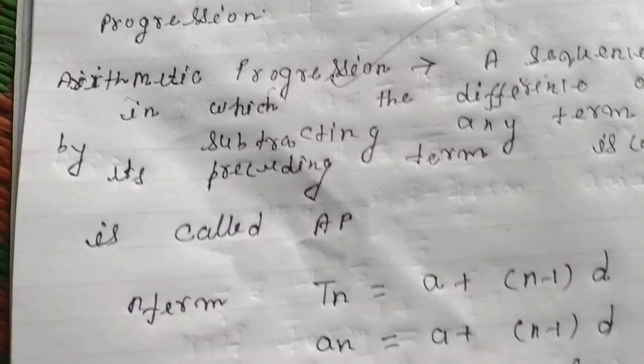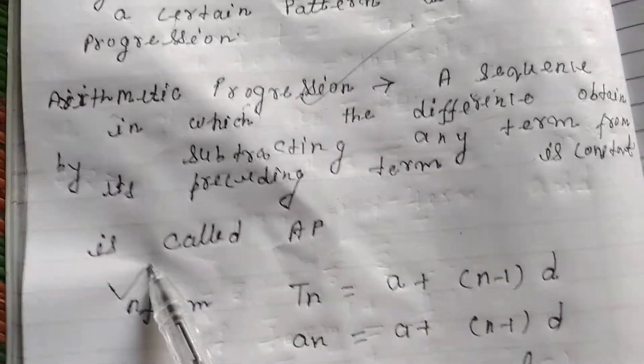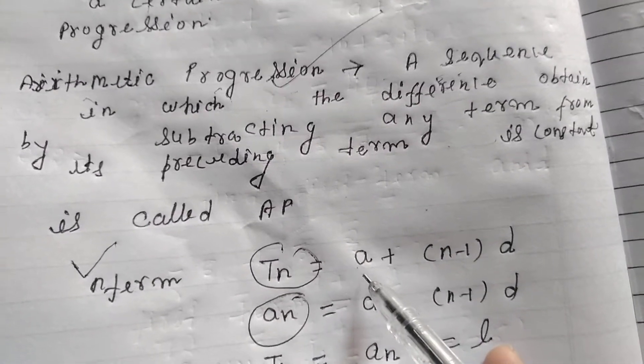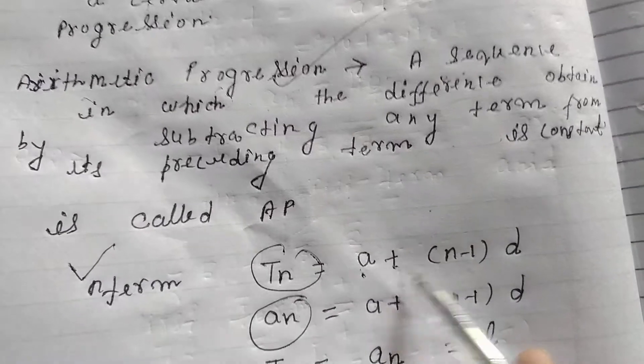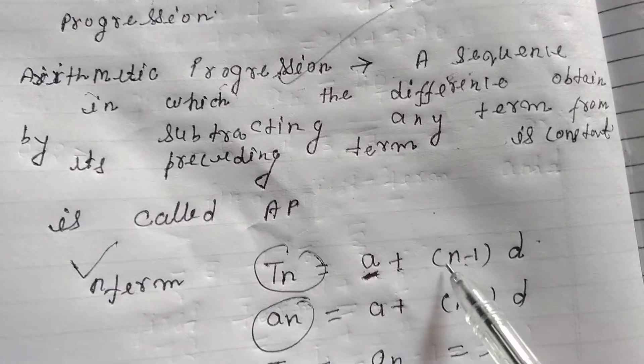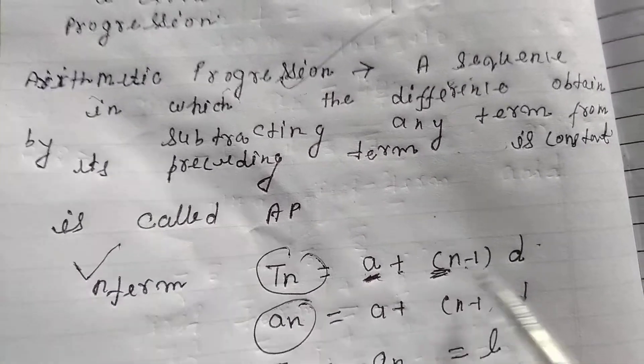Now we will be talking about the nth term, how to find it. Tn, the nth term, equals a plus (n minus 1) into d, where a is the first term, n is the number of terms, and d is the common difference.